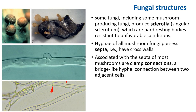The hyphae of most fungi go unnoticed underground or in their substrate. However, some fungi, including some mushroom-producing fungi, produce sclerotia — hard resting bodies resistant to unfavorable conditions. Sclerotia come in various sizes, remain dormant for long periods, and germinate when conditions are favorable. They are dark-colored to protect against sunlight and can survive in soil without water for years or even decades. Once moisture and conditions are right, they start producing mushrooms.